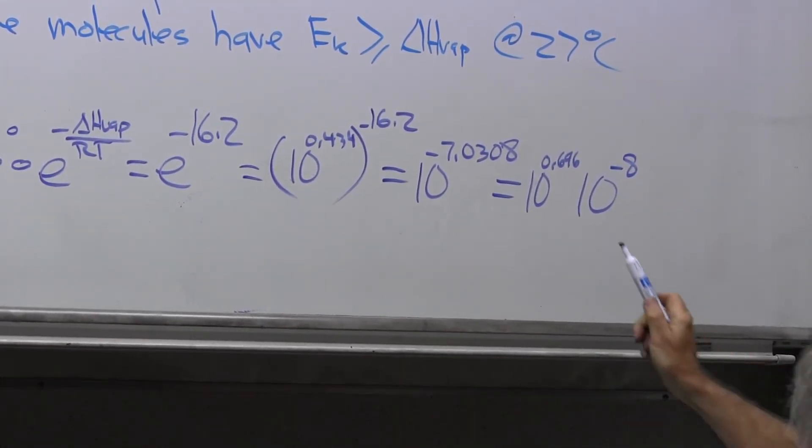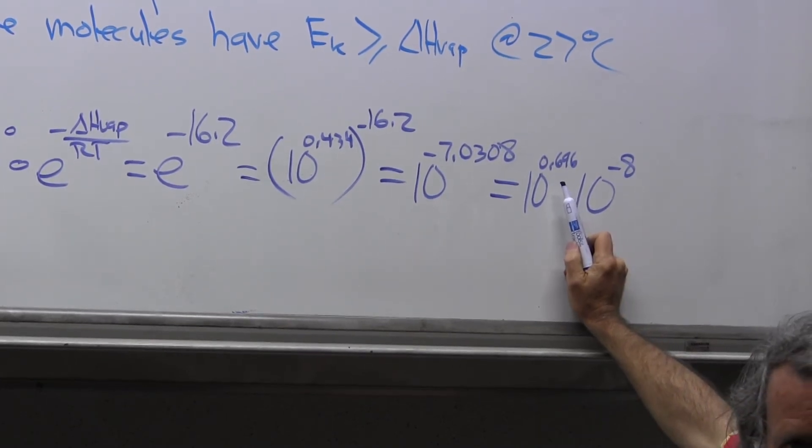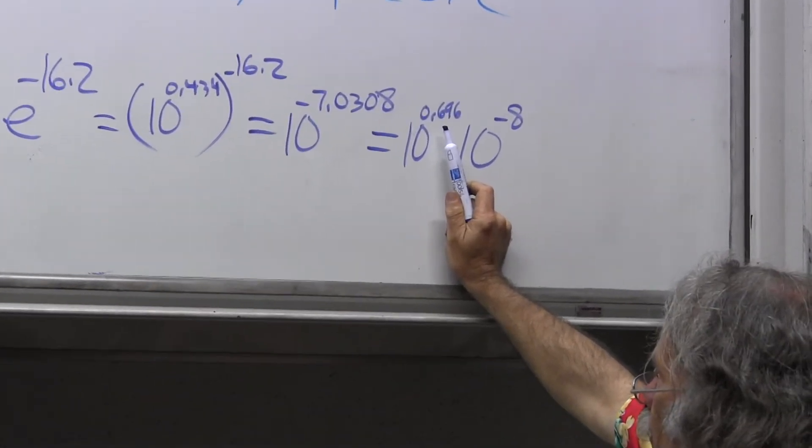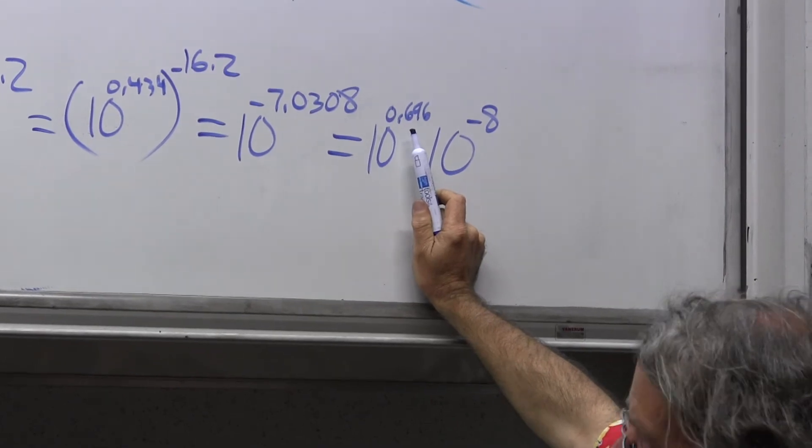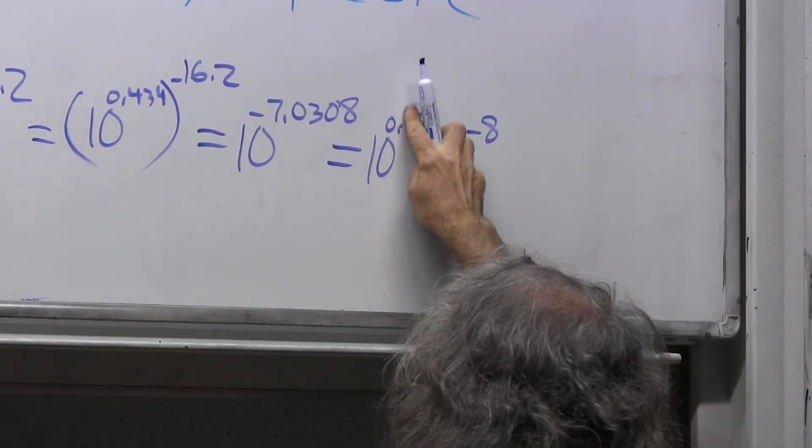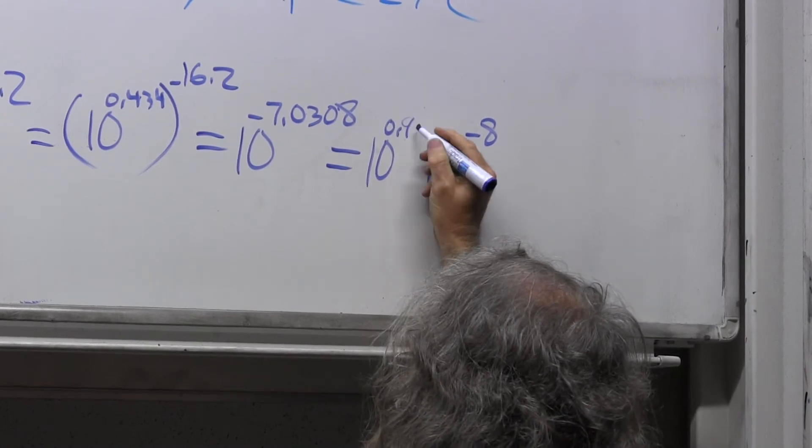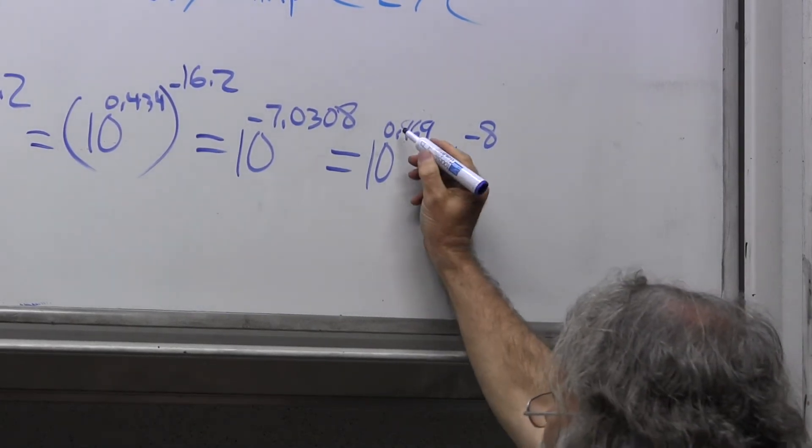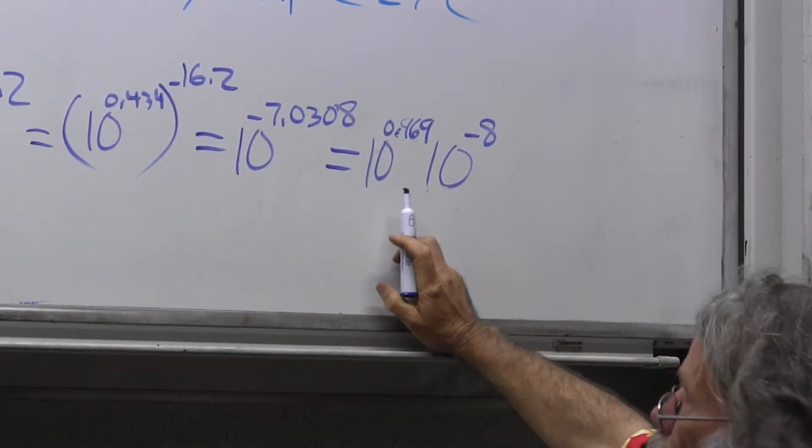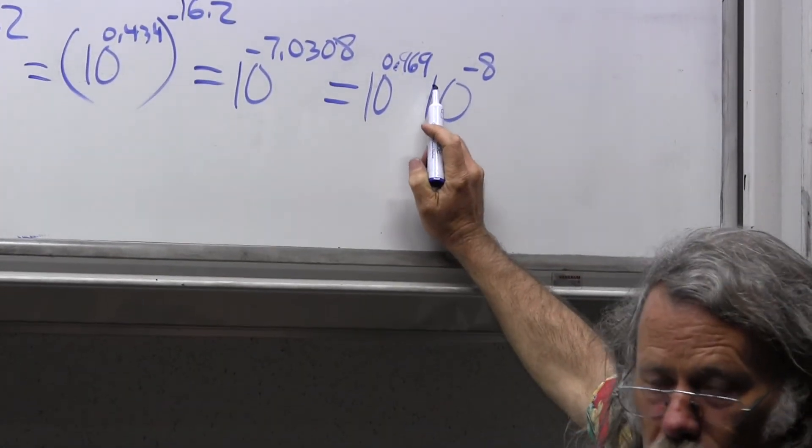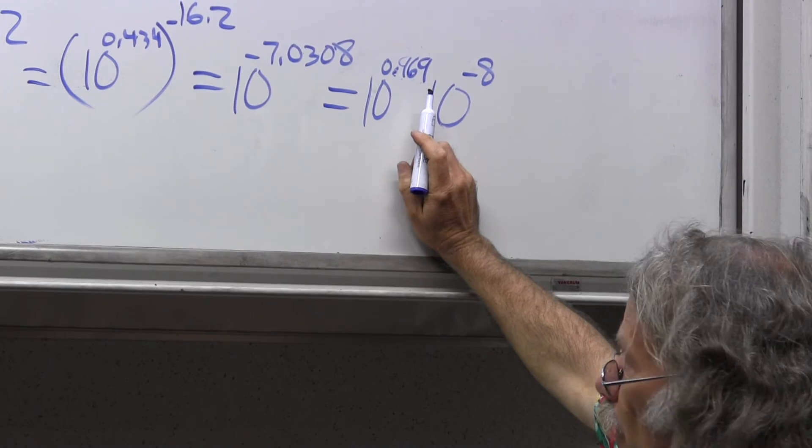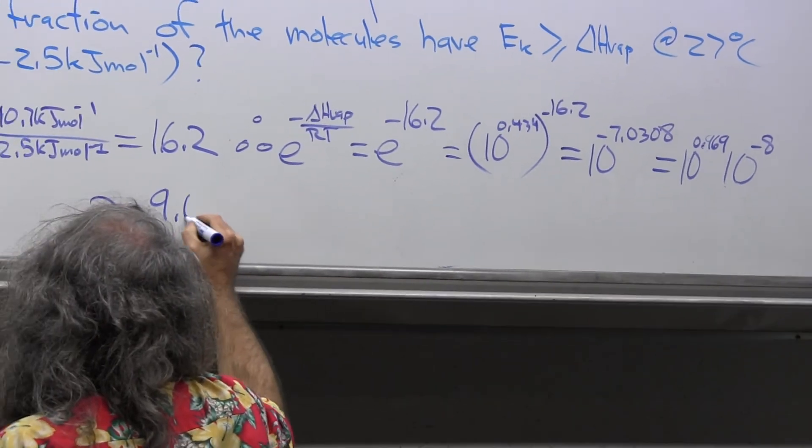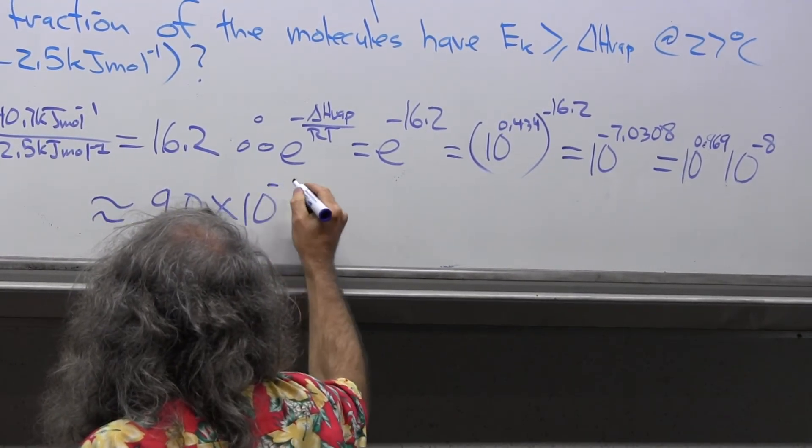Now we can recognize this is very close to 9, which equals 10 to the 0.954. This is close enough that I can say this is approximately equal to 9.0 times 10 to the minus 8.